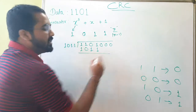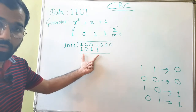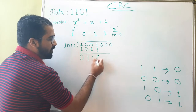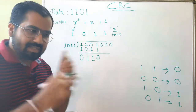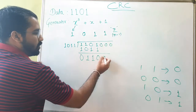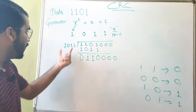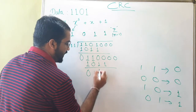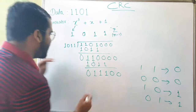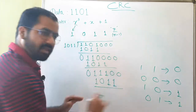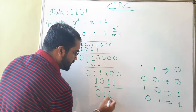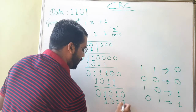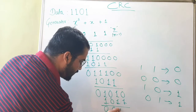Starting the division: place 1 0 1 1 and perform XOR. 1 XOR 1 is 0, 1 XOR 0 is 1, 0 XOR 1 is 1, 1 XOR 1 is 0. Bring down the remaining bits and repeat the process with 1 0 1 1 again. Continue performing XOR at each step until the final remainder is obtained — which gives us 0 0 0 1.